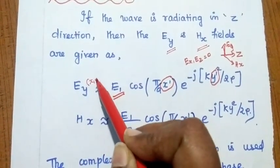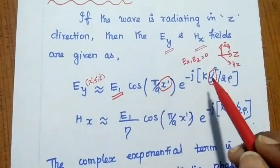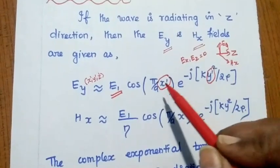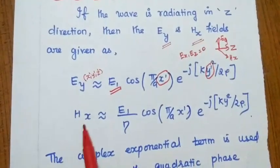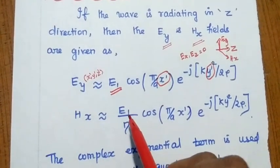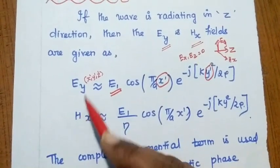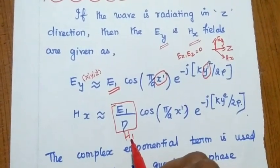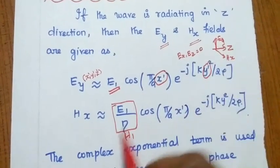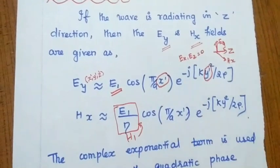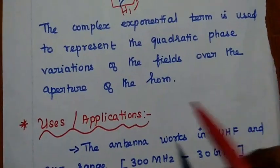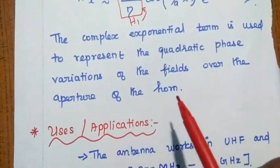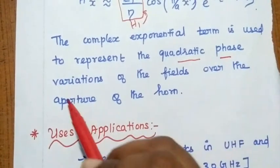We find E_Y in terms of far-field coordinates (x', y', z'). The dash notation represents far-field coordinates — we are analyzing the electric field in the far field at some distance. H_X = E₁/η·cos(πx'/A)·e^(−jky'²/2ρ), where H₁ = E₁/η is the maximum magnetic field. The complex exponential term is used to represent the quadratic phase variations of the fields over the aperture of the horn antenna.